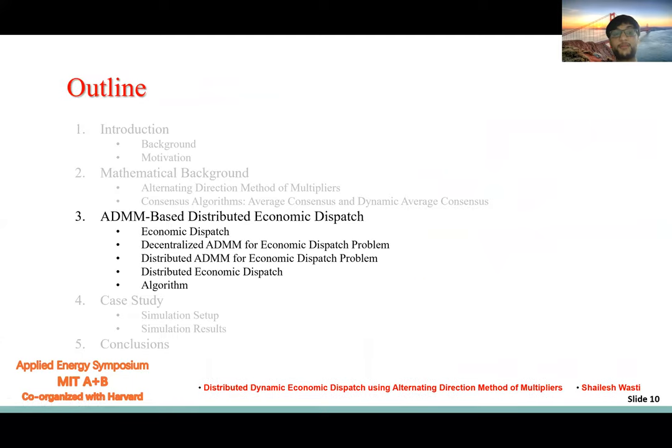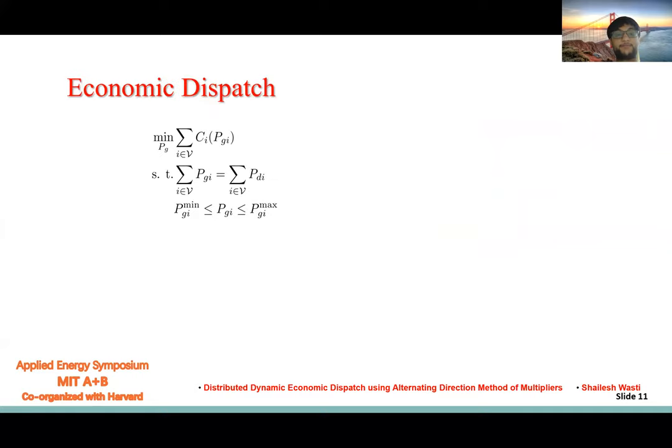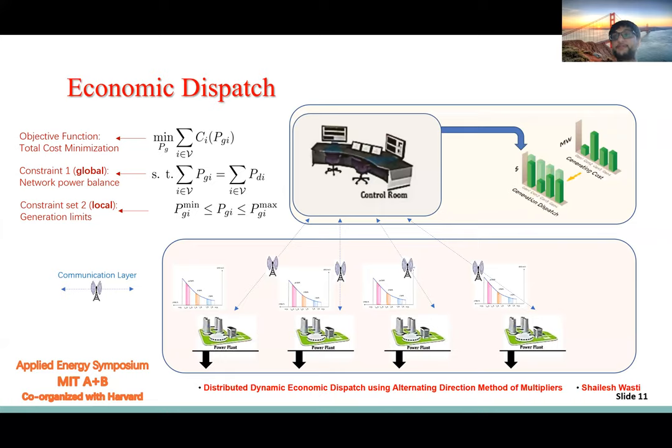Now let's talk about ADMM-based distributed economic dispatch. This is economic dispatch, a typical resource allocation problem in power system. This is the objective function and the global network power balance with generator constraints. What we see in the picture is a centralized economic dispatch, a control room that has the data of all the generating units, and it runs the optimization and broadcasts back the schedule to all the plants.